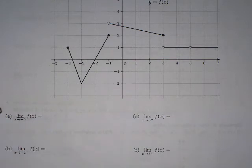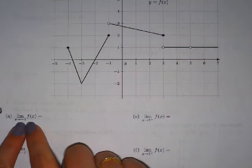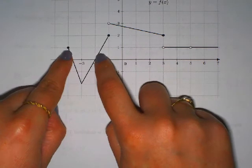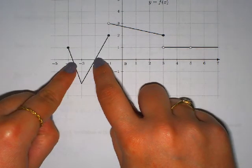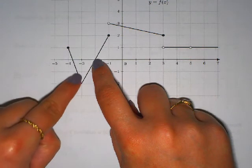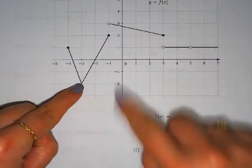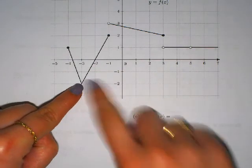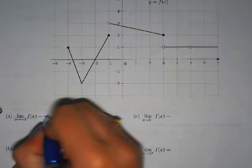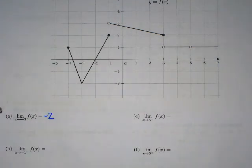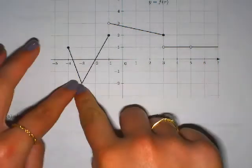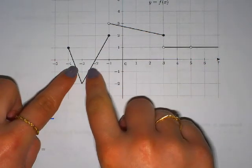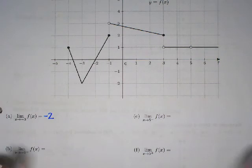Negative 3 is your x value, so approach from both sides. Come in from the left and from the right of negative 3 and follow the graph. The left-hand limit as I follow toward negative 3 is down at negative 2. Coming in from the right toward negative 3 also goes down to negative 2 — my fingers meet, so the answer is negative 2. Don't start super far out; just get near negative 3 on both sides. If your fingers meet, that's your answer; if not, it's DNE.